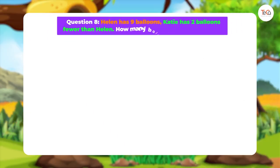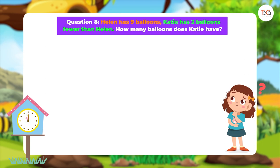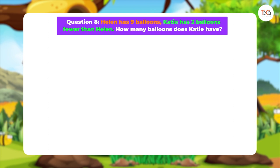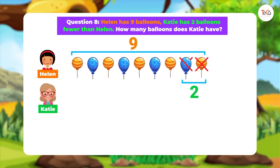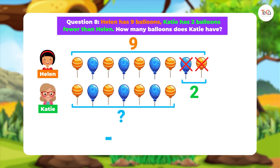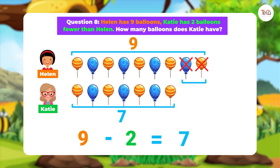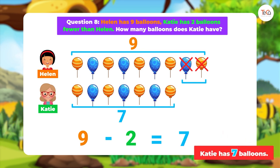Question 8. Helen has 9 balloons. Katie has 2 balloons fewer than Helen. How many balloons does Katie have? Katie has the number of balloons that is 2 fewer than 9, so we subtract 2 from 9. Nine minus 2 equals 7. We answer: Katie has 7 balloons. Notice that we use subtraction to find 'fewer than.'